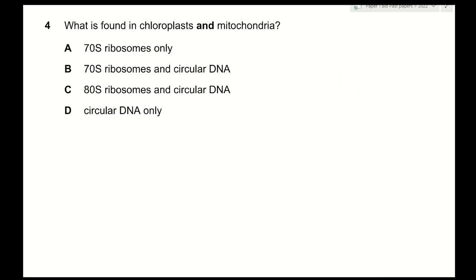Question 4: what is found in both chloroplasts and mitochondria? A — 70S ribosomes only — is incorrect. B — 70S ribosomes and circular DNA — is correct: both organelles have 70S ribosomes for protein synthesis and circular DNA to code for those proteins. C — 80S ribosomes and circular DNA — is incorrect, as 80S ribosomes are only in the cytoplasm of eukaryotic cells. D — circular DNA only — is also incorrect. The answer is B.